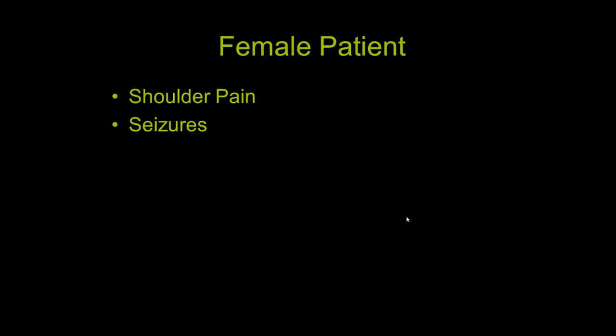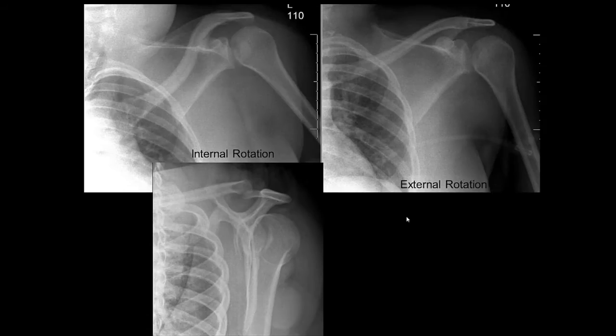Now let's look at our patient. We are going to look at a female patient who has shoulder pain after multiple seizures. This is a fairly classic presentation for a patient with a posterior shoulder dislocation, and that history may or may not be provided to you.